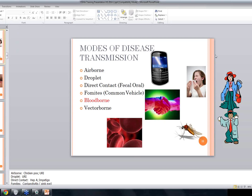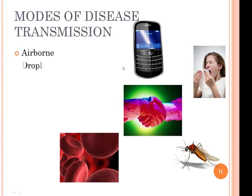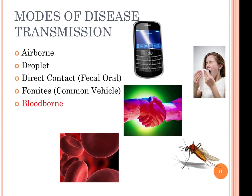Blood-borne transmission is what we're concentrating on today. Those diseases are carried through the blood, and one would contract them by exposure to blood or secretions. Vector-borne transmission involves carriers like mosquitoes, which carry diseases such as malaria. Those are the basic ways in which one can contract a disease — you have to be susceptible, it has to be the right modality, and there has to be enough of it.